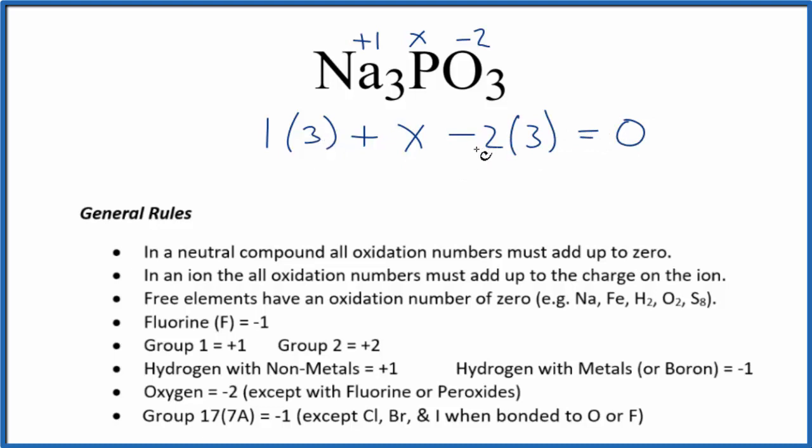So we have 3 and then minus 6. So X minus 3 equals 0. Add 3 to both sides, and we end up with X equals a positive 3.